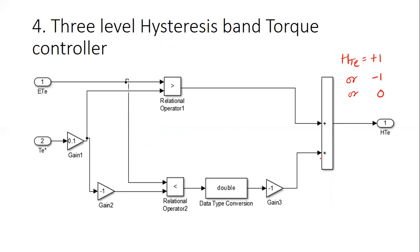The three-level hysteresis torque controller determines the torque status signal: +1 to increase torque, -1 to reduce torque, and 0 for no change. The torque error is compared with the torque command, and if it is within a 10% band (band = 0.1), no change is made. If it is positive and beyond the band, torque must be reduced; if negative and beyond, torque must be increased. Simple greater-than/less-than logical operations generate the Htc signal of +1, -1, or 0.